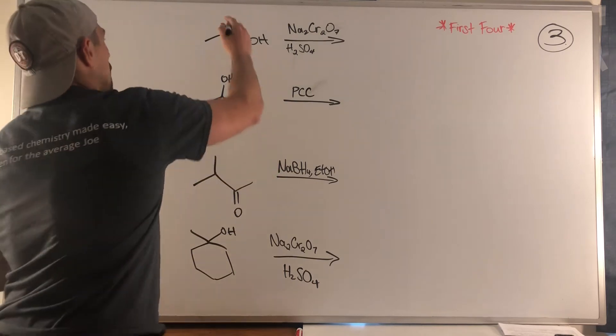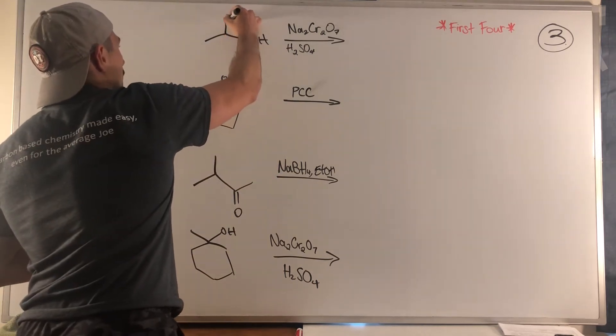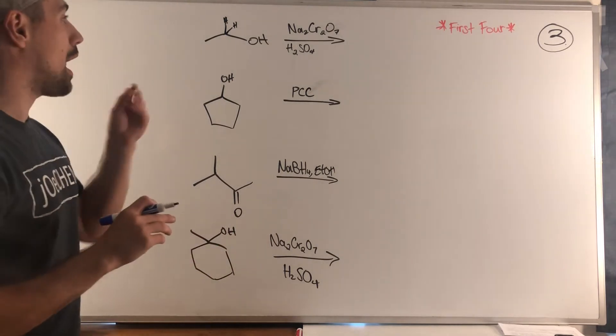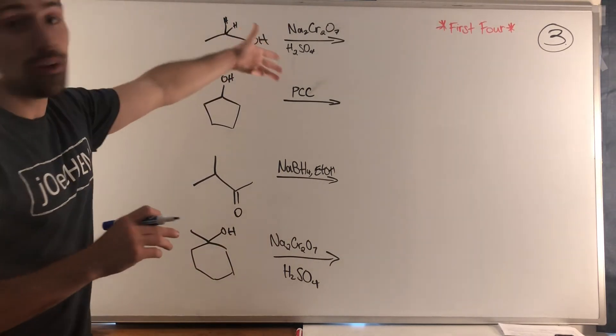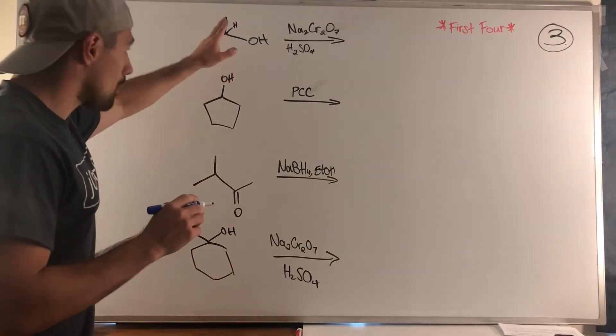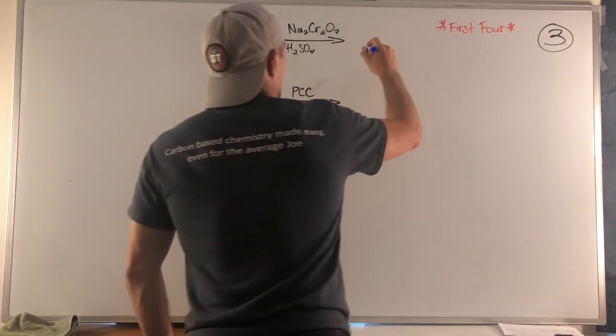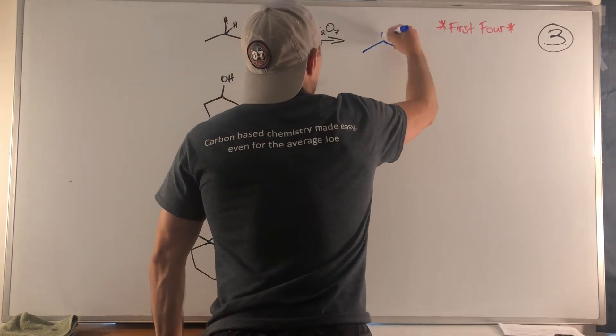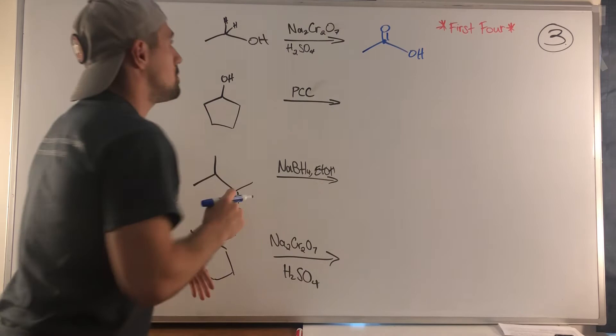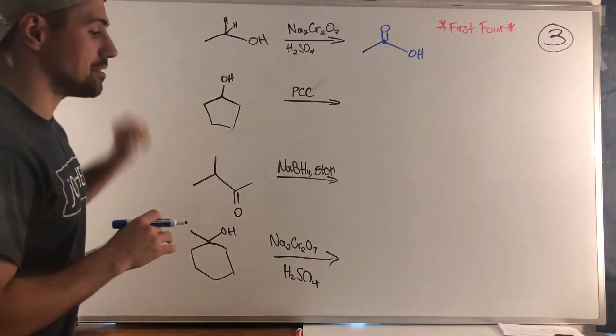Remember the rule - you can oxidize an alcohol as long as you have at least one hydrogen present. In this first problem we have the Jones reagent with a primary alcohol, so we are going to oxidize that alcohol as much as we can, more bonds to oxygen for that carbon, which means we go all the way to the carboxylic acid.